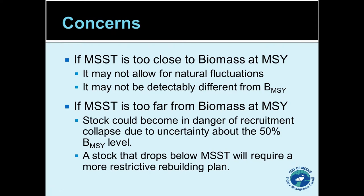One problem with fish that have low mortality rates is that we could end up — and we believe we have ended up — with the MSST threshold being set too close to the MSY level. As a result, we may get spurious declarations of an overfished stock through natural fluctuations. We're also concerned that if we set MSST too close to MSY, there's a lot of uncertainty in these estimates of stock biomass, and it may not be detectably different from the MSY level.